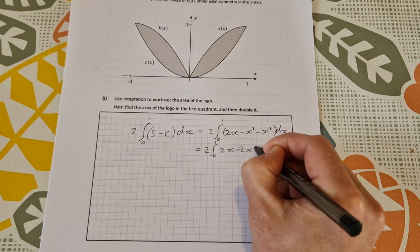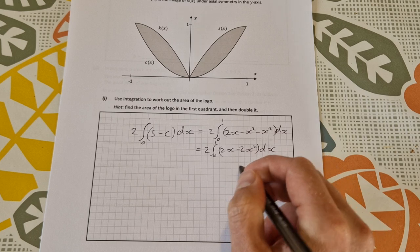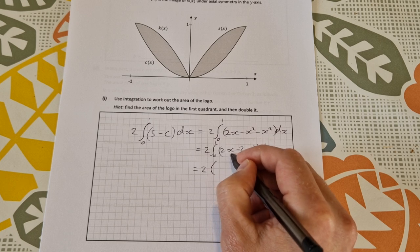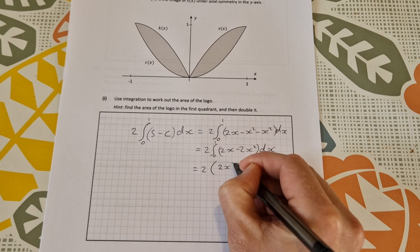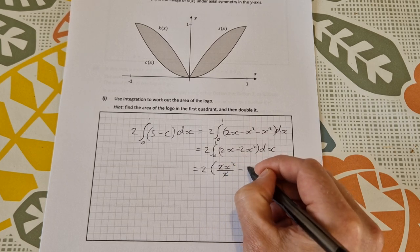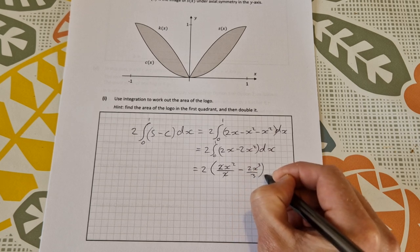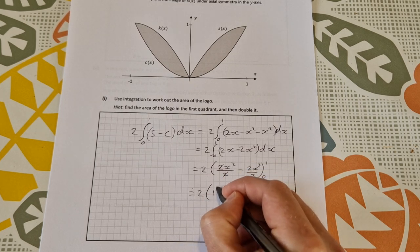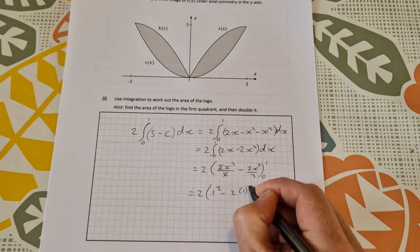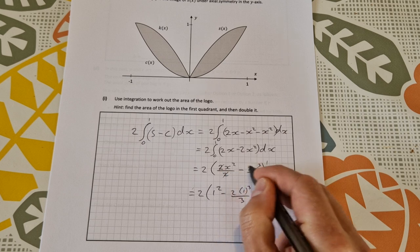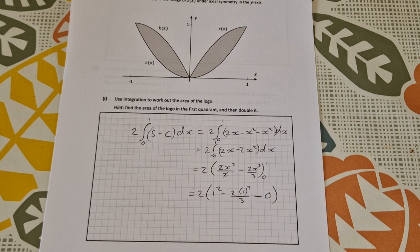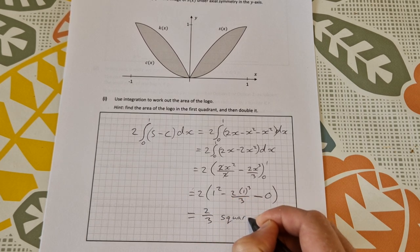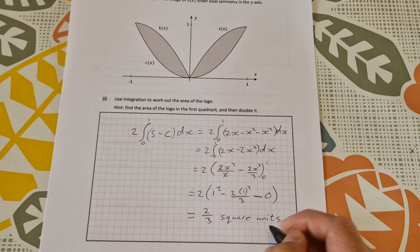So that's equal to two times the integral from zero to one of 2x minus 2x squared dx. Go ahead and integrate, so that's equal to two times—if I integrate 2x minus 2x squared, 2x is x squared minus 2x cubed over 3, evaluated between 0 and 1. That's equal to 2 times 1 squared minus 2 times 1 cubed over 3, minus zero. So that is equal to 2/3 square units. That is the area of the logo and that's worth 5 marks.